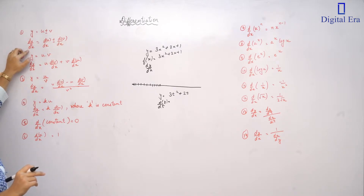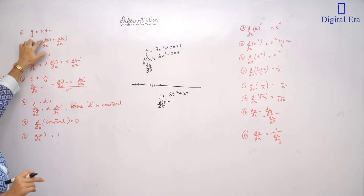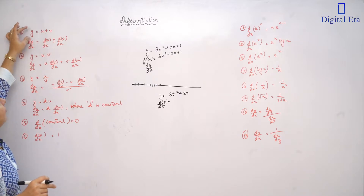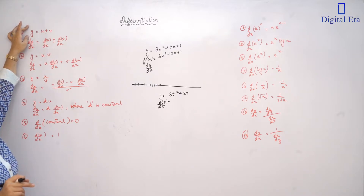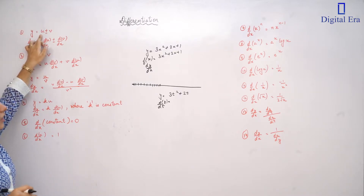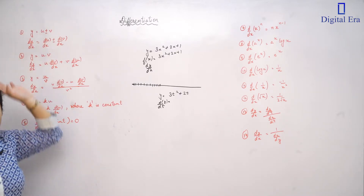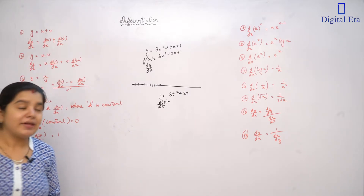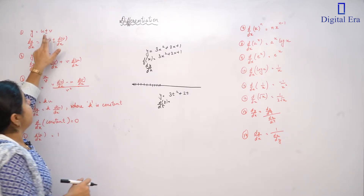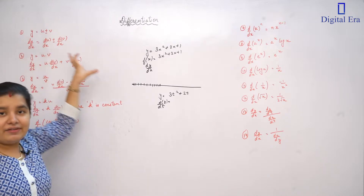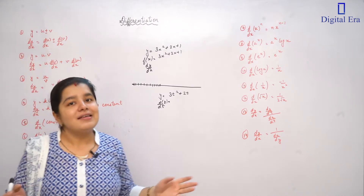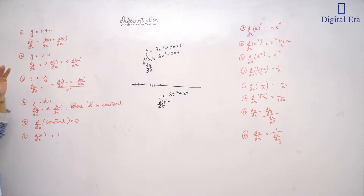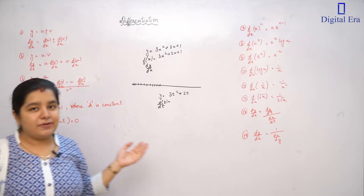So dy/dx is equal to du/dx plus dv/dx. When we have the derivative of y equals u plus v, we take the derivative of each part separately. Similarly, if we have subtraction, then we use a minus sign: the derivative of the first function minus the derivative of the second function. This is the first rule — addition and subtraction.